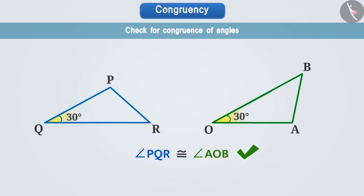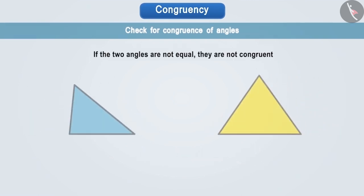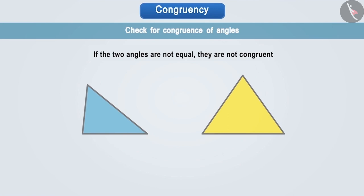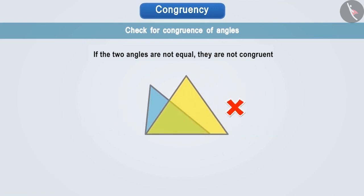That is, if two angles are equal, then they are congruent. On the contrary, we can say that if two angles are congruent, then their measurements are equal. If the two angles are not equal, they cannot be placed one above the other in any way, so that the vertices and sides of one angle are exactly on the vertices and sides of the other. In such a situation, two angles cannot be congruent.